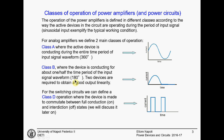In class B operation, you have usually two devices: one will conduct for half of the period of the input sinusoid, and the other one conducts for the second half. As we will see, this improves the efficiency.